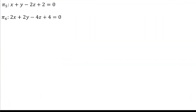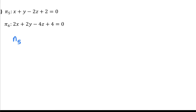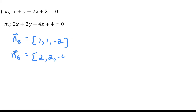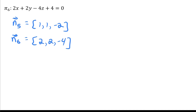Let's move on to the last example in part one. Once again we have scalar equations of two planes. From plane five, the coefficients give normal vector (1, 1, -2), and from plane six, the coefficients give (2, 2, -4). Multiplying normal five by two gives exactly normal six — they are scalar multiples of each other, meaning the normals are parallel and therefore the planes are parallel. But are they parallel and distinct or parallel and coincident?